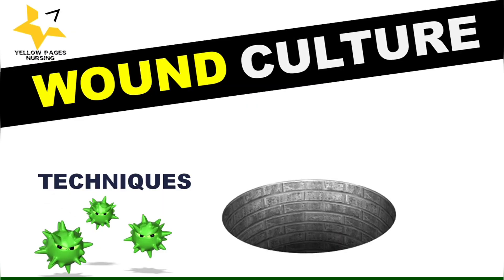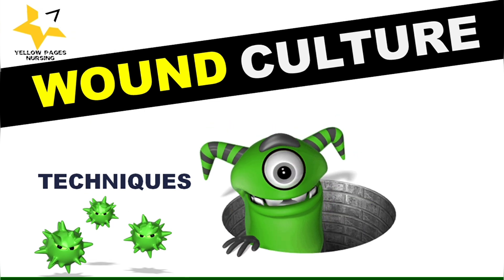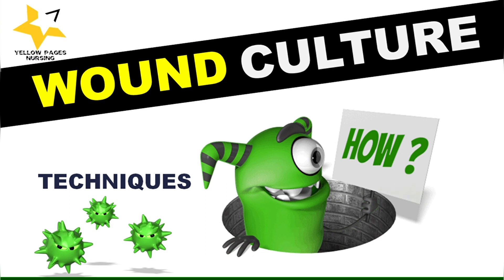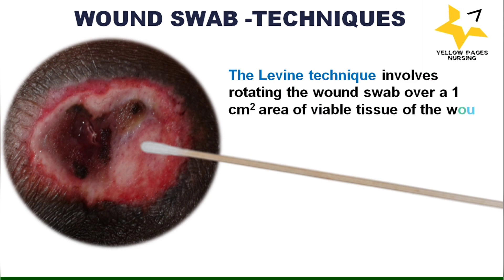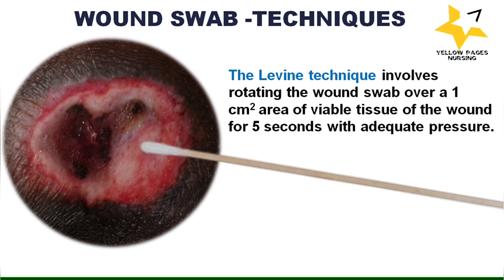Now let's discuss wound culture techniques. The first technique is the Levine technique, the most commonly used. It involves rotating the wound swab over a one centimeter square area of viable tissue of the wound for five seconds with adequate pressure. The viable wound tissue is the red or pink area of the wound, as shown in the picture.